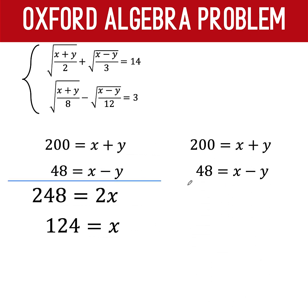Then, using again the same system of equations, this time, we are going to subtract. So, we can solve for y. 200 minus 48 is 152. x minus x is 0. But y minus negative y becomes y plus y or 2y. Dividing by 2, we have y equals 76. And so, we now have the values for x and y. x is 124 and y equals 76.